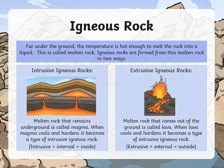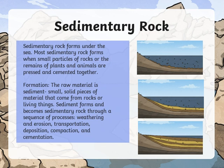Moving on to the second type, which is sedimentary. Sedimentary rocks — from the name — are made up of sediments, or small solid pieces of material that come from rocks or living things. They form by a sequence of processes such as weathering, erosion, transportation, deposition, compaction, and cementation. We are going to talk about each process in detail.